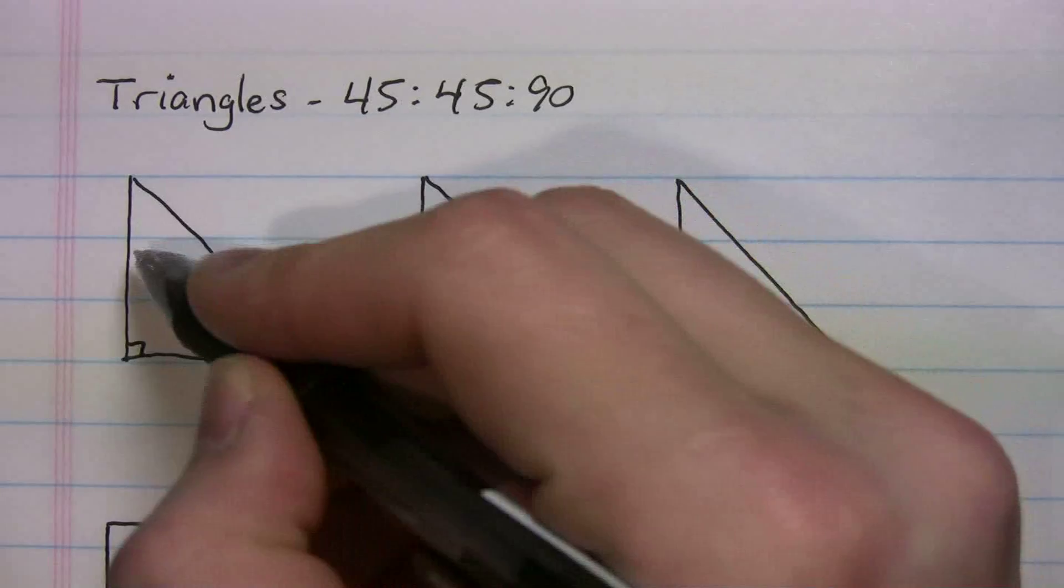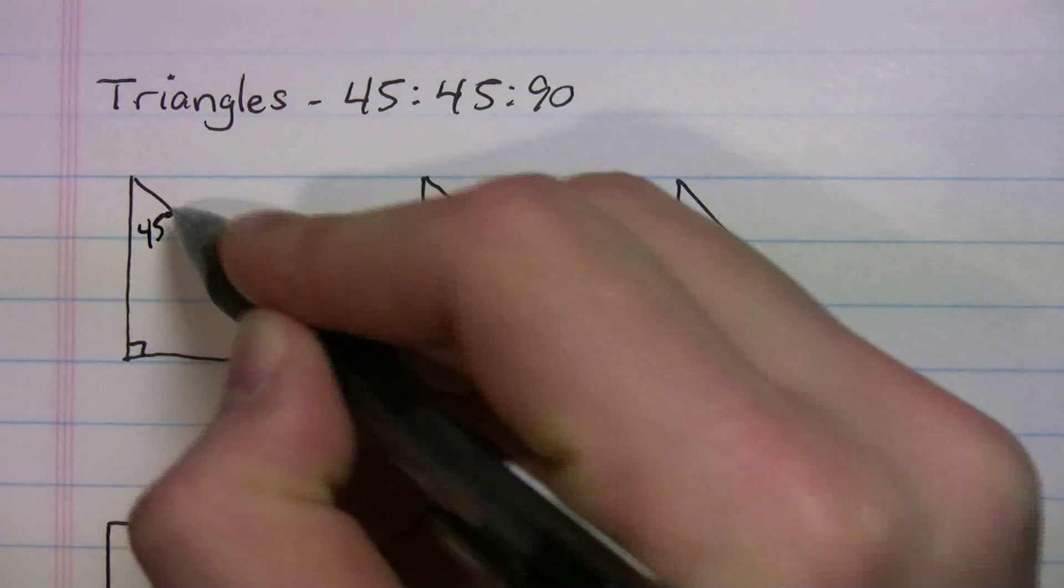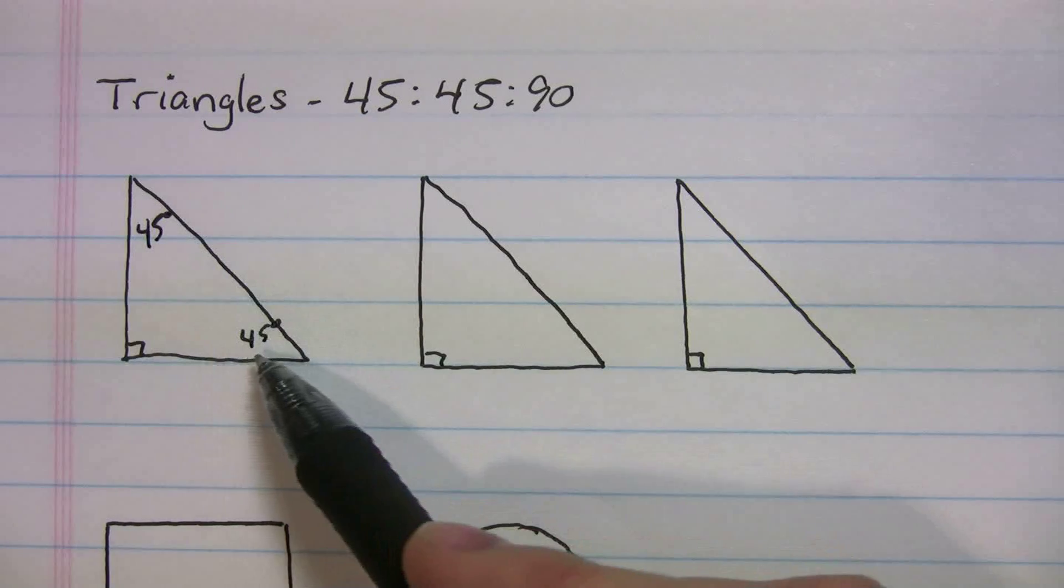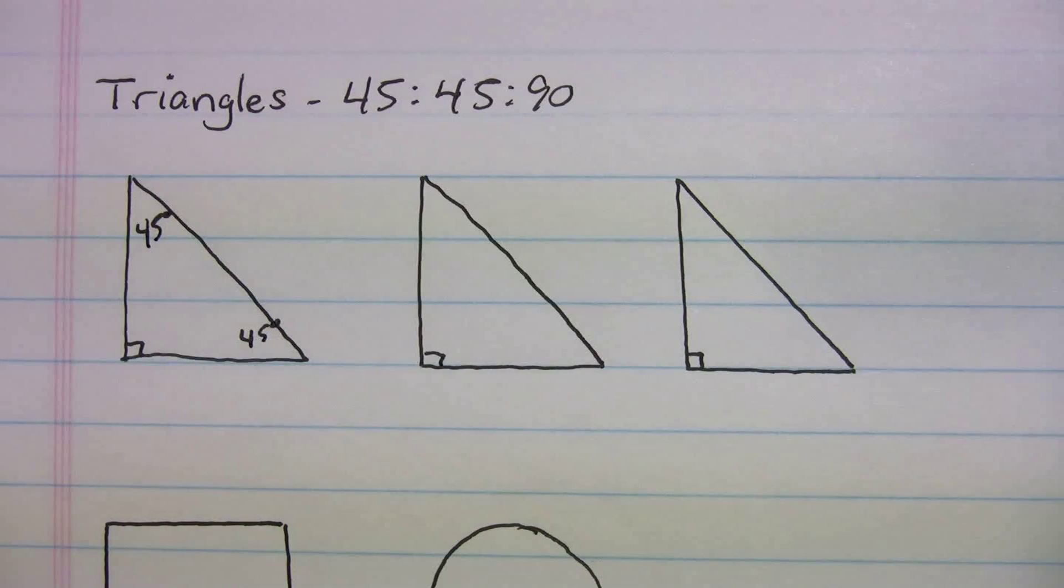So the most obvious way would be, and this is kind of example number one, they might just tell you all three sides. This is 90, this is 45, this is 45. Simple enough, right?